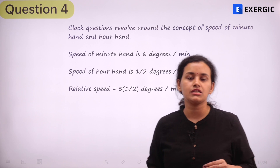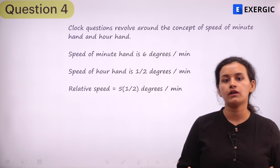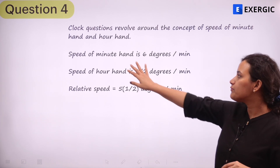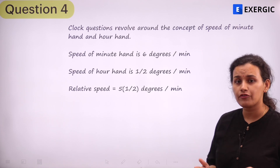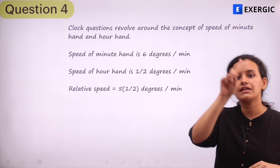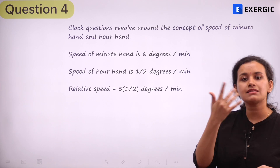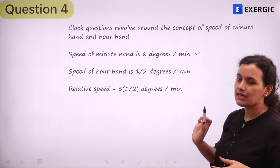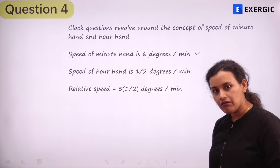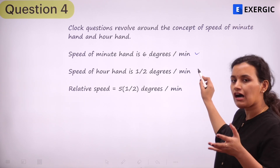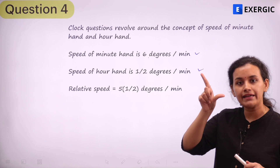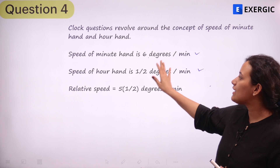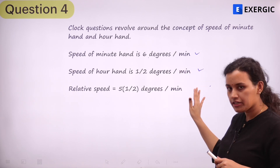First and foremost, all questions of clocks revolve around the concept of the speed of the hour hand and the speed of the minute hand. The speed of the minute hand is 6 degrees per minute — it covers the entire 360 degrees in 60 minutes. As for the hour hand, it covers only 30 degrees in 60 minutes, so that is half a degree per minute.